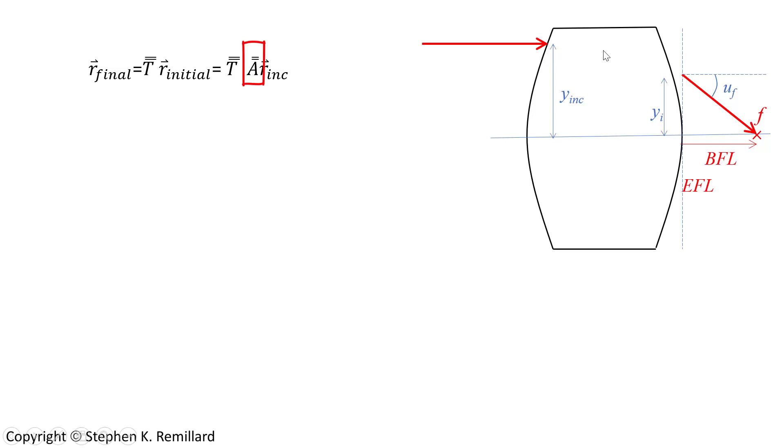And then you have another transfer matrix to describe the movement of this ray from the second lens surface to the focal point. And we will use that to find where that focal point is.